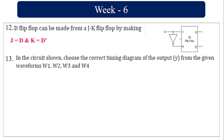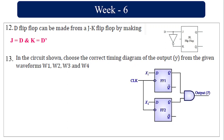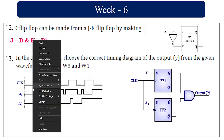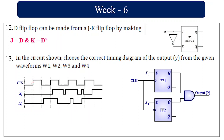In the circuit shown with the timing diagram, x1 and x2 are connected to two D flip-flops with a clock. The output is the logical AND of both flip-flops. At the positive edge, x1 and x2 are both 0, so the output is 0.